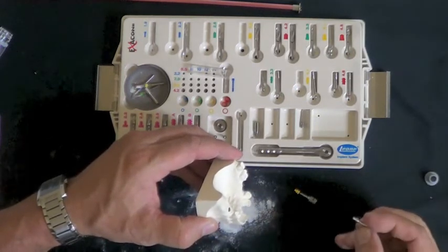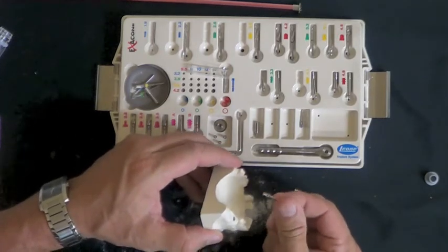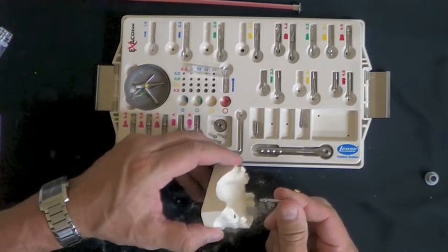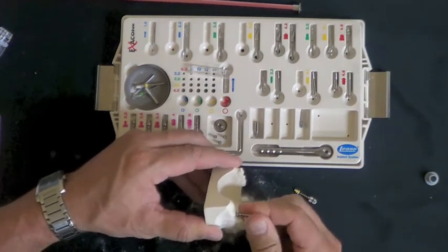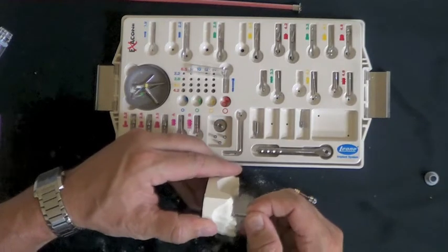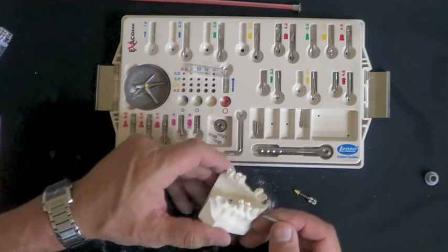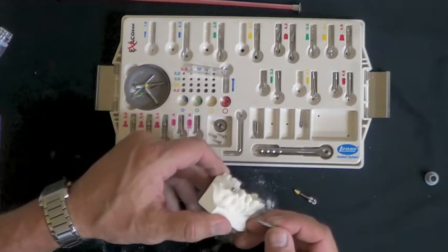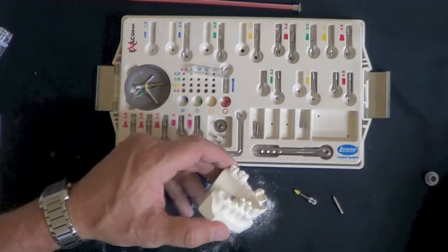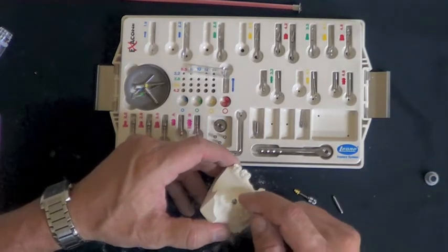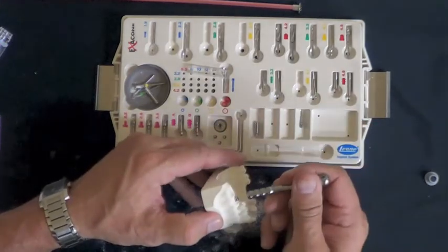At that point, if you want to place the healing cap, the healing cap comes packaged looking like this on a metal connector. Simply insert the healing cap into the implant until it seats and then rotate the connector off of the implant and then you'll have your healing cap in position. This can be tapped into place with a mallet or an instrument to assure that it's fully seated.